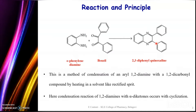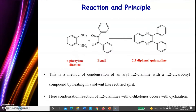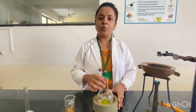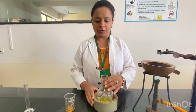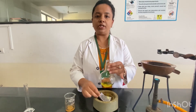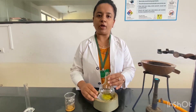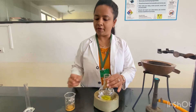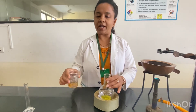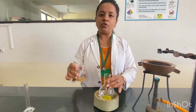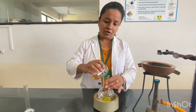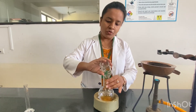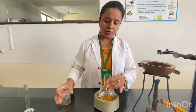Let us move on to the practical procedure of this synthesis. Our first solution is a warm solution of 2.1 grams of benzyl and 8 ml of alcohol. To this we are adding our second solution which is 1.1 gram of orthophenylenediamine and 8 ml of alcohol. We are going to mix both of these two solutions.